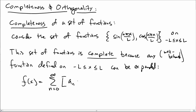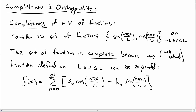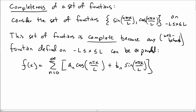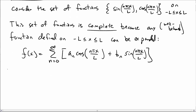You can write f(x) as the expansion: a_n cosine of nπx/L plus b_n sine of nπx/L. This is the usual Fourier series, and so we say that the set of functions — sine and cosine — are complete.